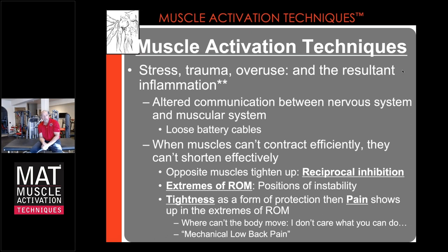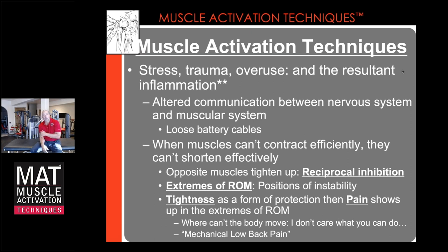When you have loose battery cables and muscles can't contract efficiently, they can't shorten fully. If my bicep is supposed to contract, it should fully shorten into its short range, and the opposite muscle, due to reciprocal inhibition, will relax to allow full range of motion. But when you have stress, trauma, and overuse, the resultant inflammation alters communication between the muscles that are trying to shorten — so those muscles can't shorten effectively, and the opposite muscles don't lengthen effectively. You lose the reciprocal inhibition to the antagonist muscle.